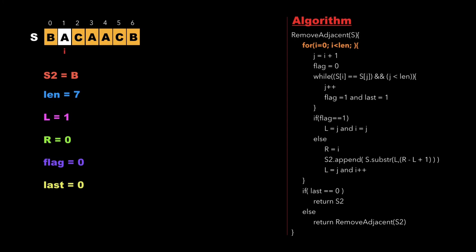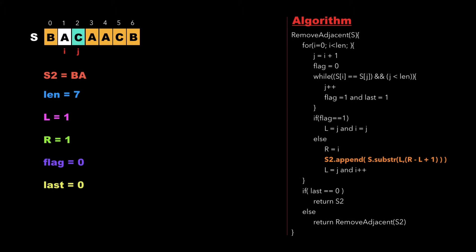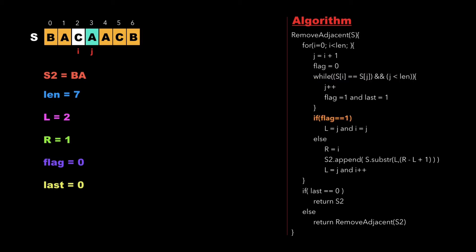Now i points to location 1, character 'a'. We initialize j as i plus 1 and flag as 0. We check whether s[i] equals s[j]. Since 'a' is not equal to 'c', we check whether flag equals 1. Since flag is 0, we move to else, update r as i which is 1, and append character 'a' to s2. We update l as j and increment i. Next, i is 2, j is 3, flag is 0. Since 'c' is not equal to 'a', flag is still 0, so we update r as 2 and append 'c' to s2. Then update l as j which is 3, and increment i.